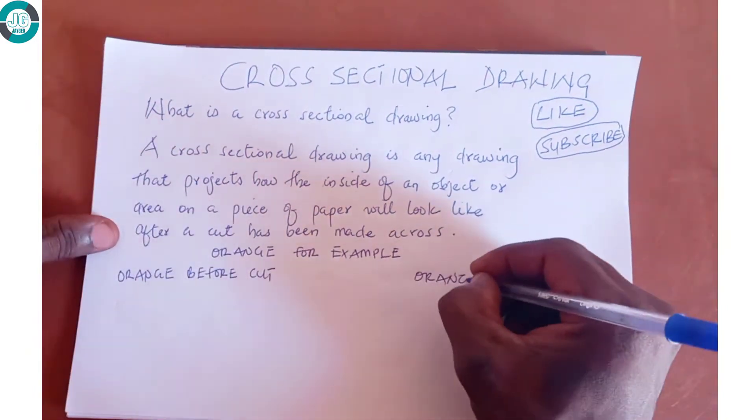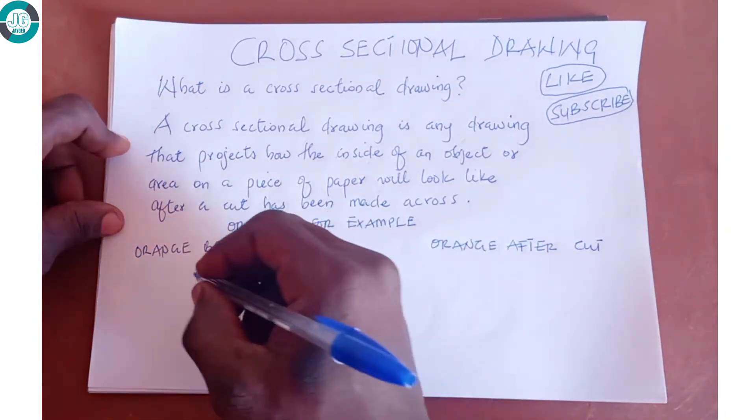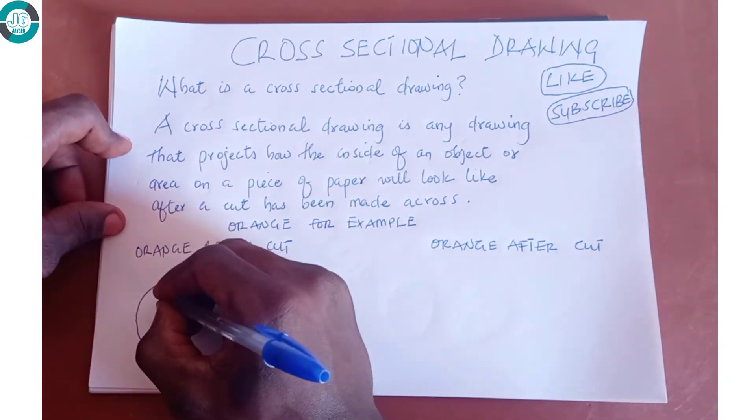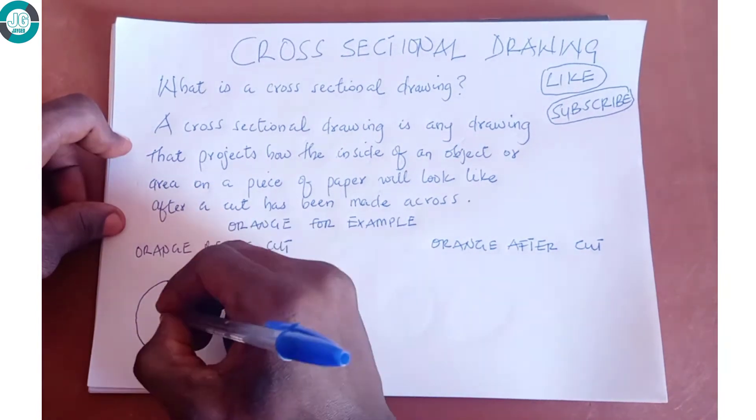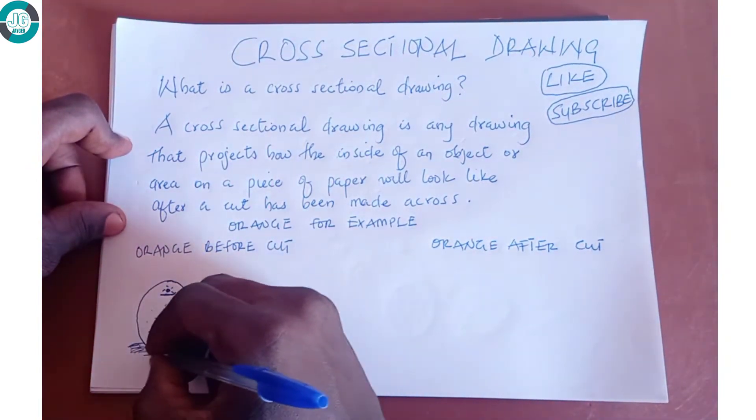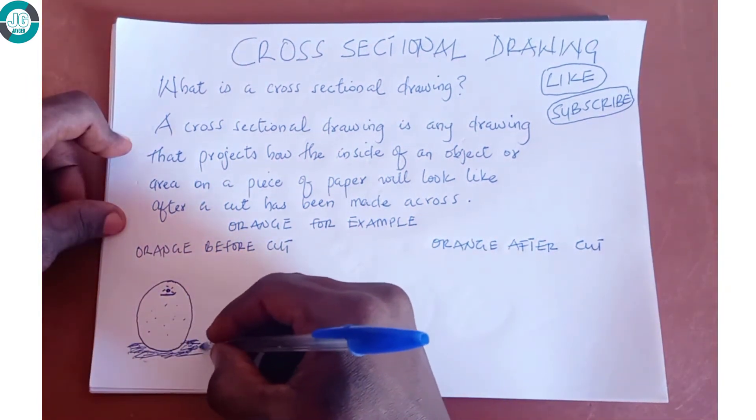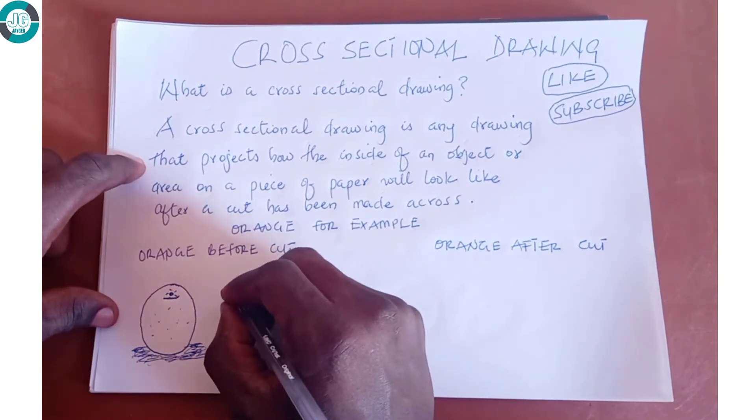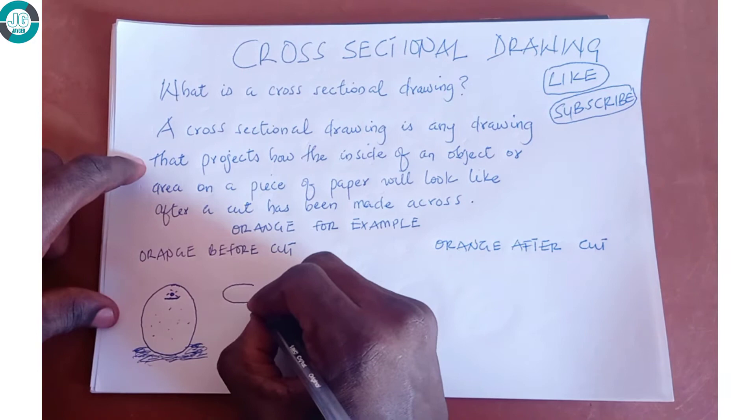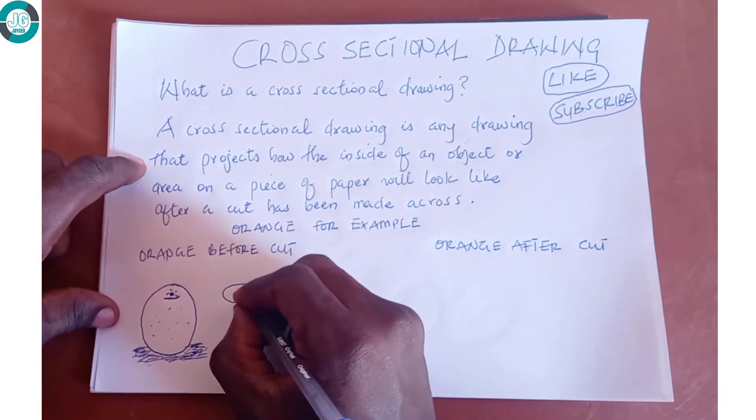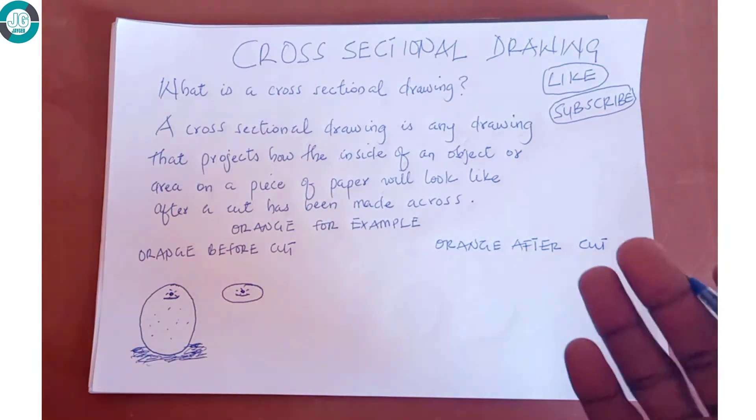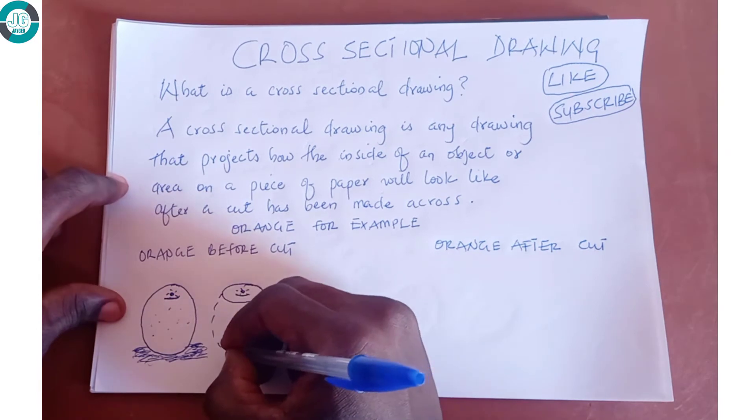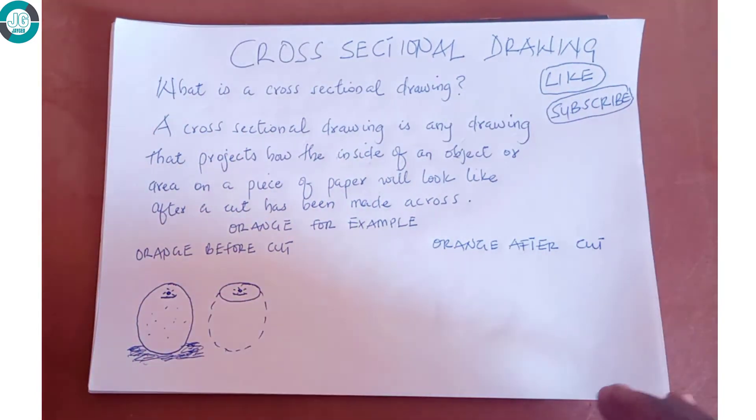Let's use an orange for example. When you have an orange like this, and you look at the orange from its top part, this is how the top part of the orange would look like. Let's assume that at this stage you are unable to see the orange fully or unable to see the full side of the orange, except for its top part.